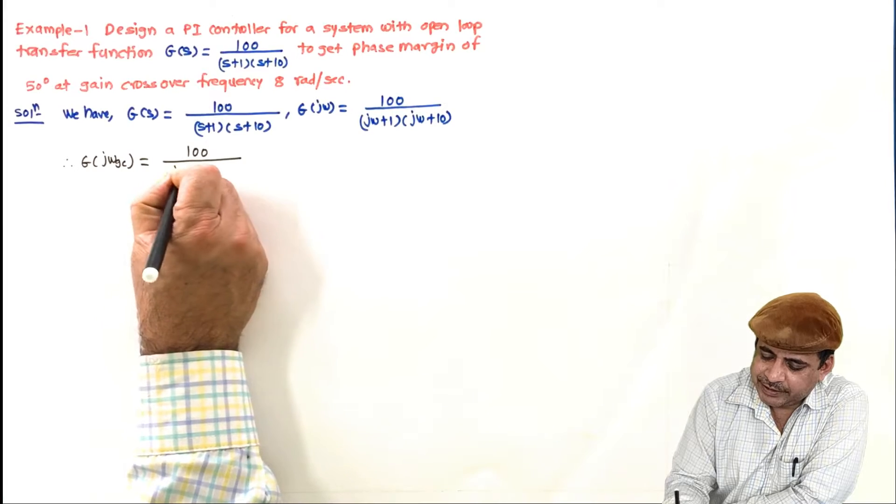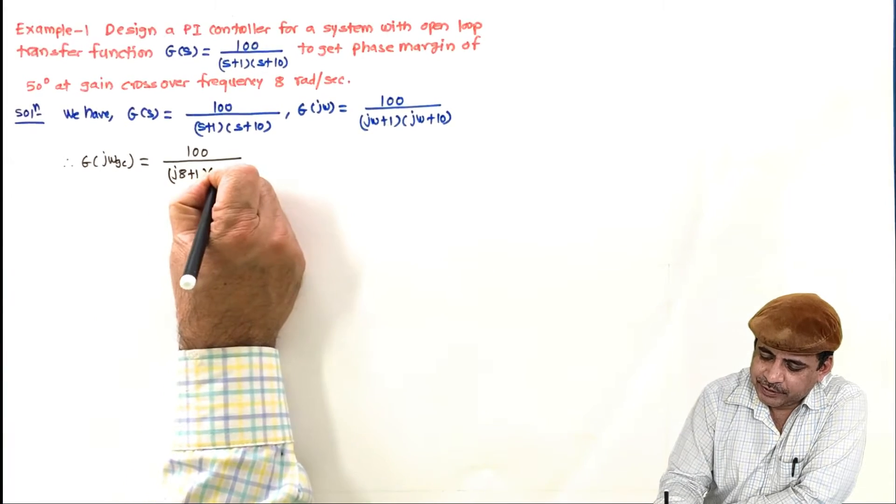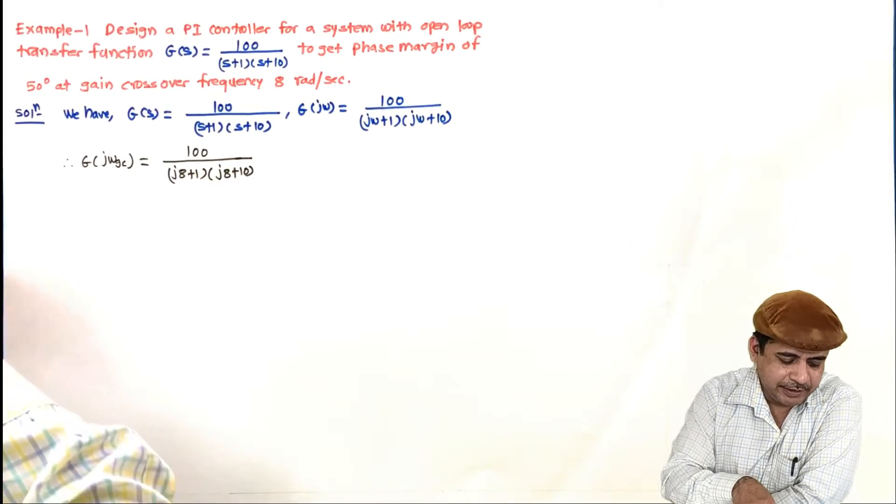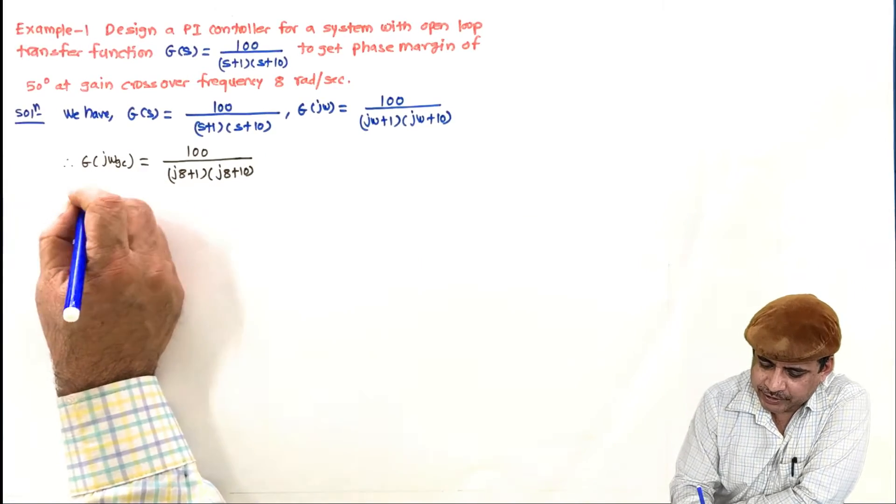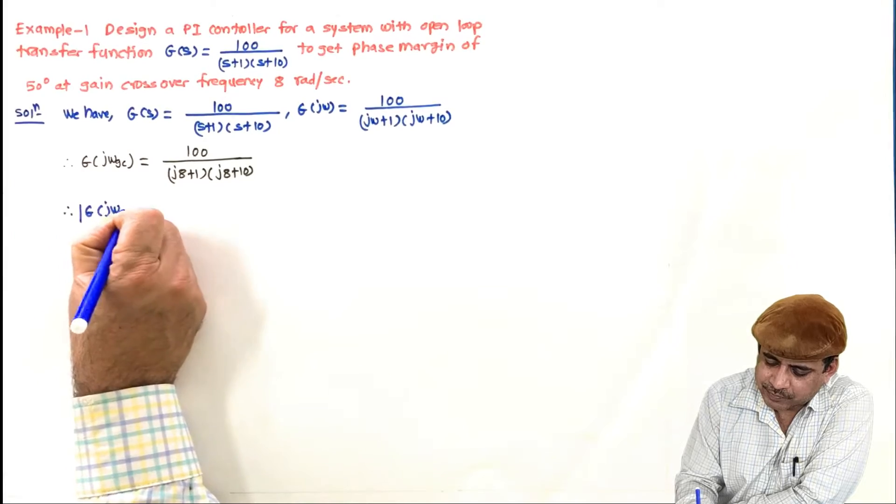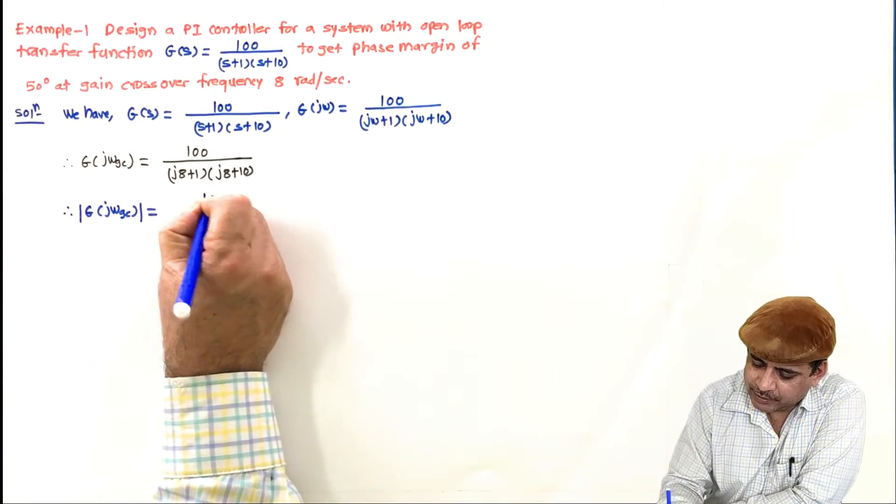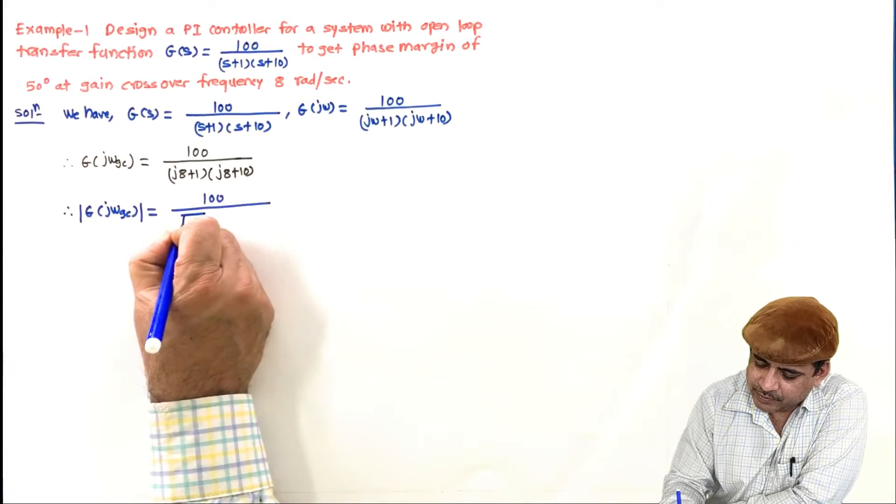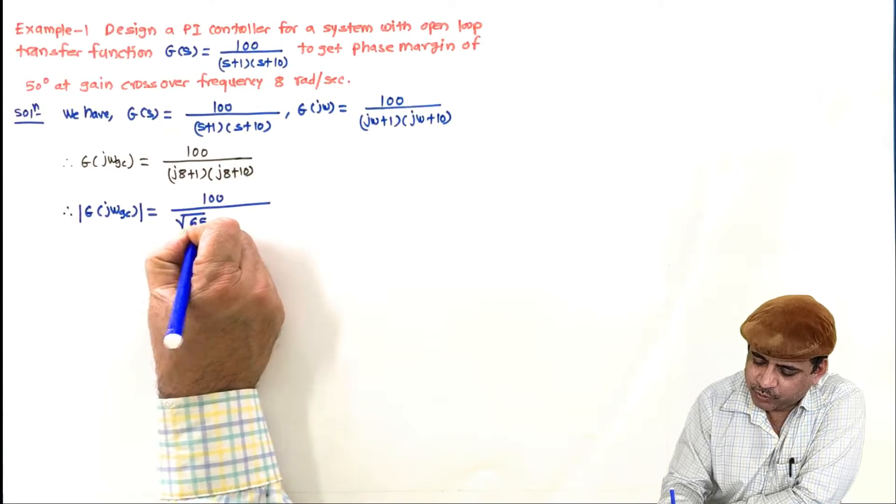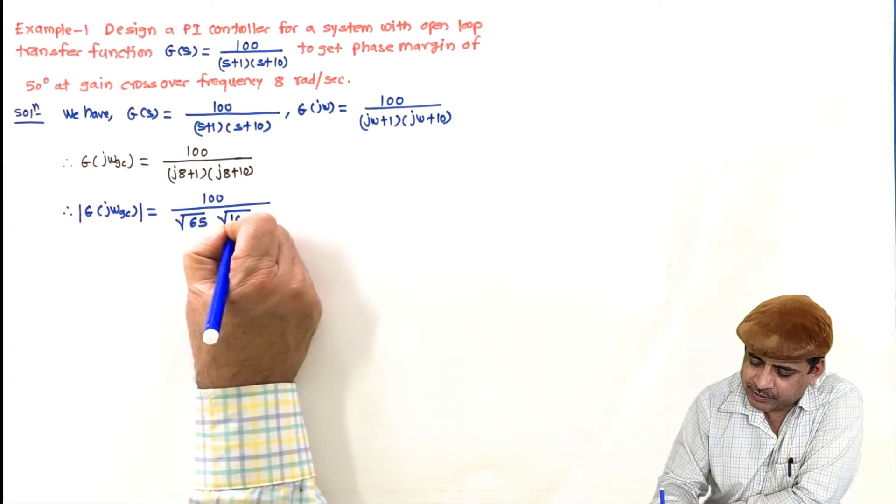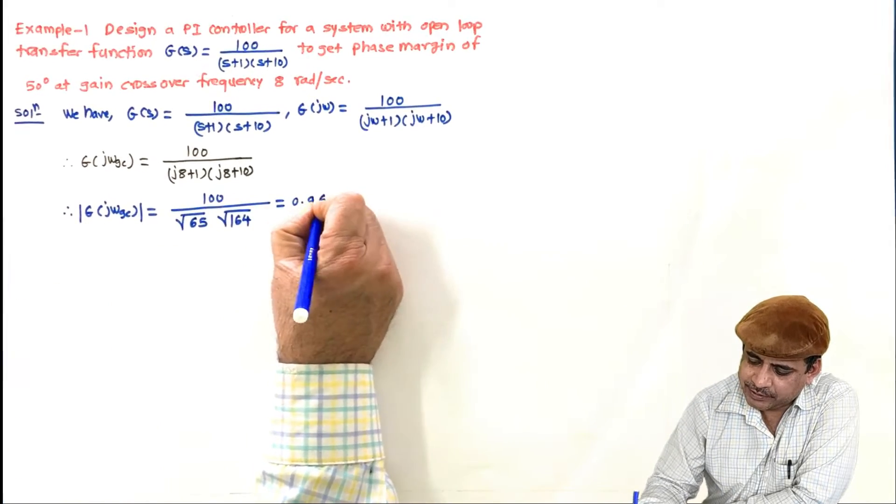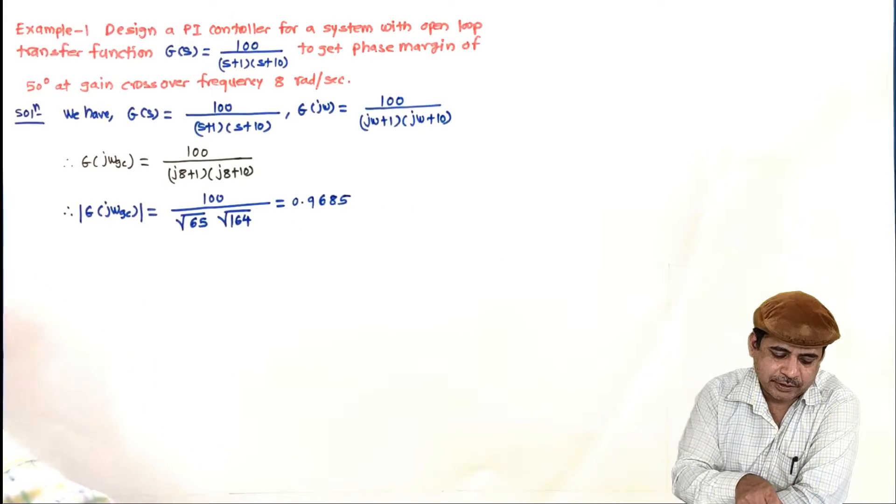So this will be j8+1 times j8+10, and this gives me its magnitude as 100 divided by the square root of imaginary part squared plus real part squared. So 64+1 is 65 and here 64+100 is 164, and it is coming 0.9685.